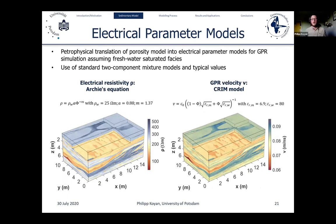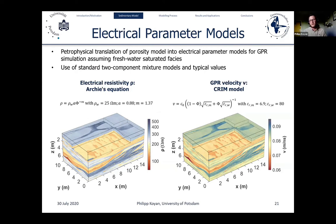To model GPR data, we need electrical parameter models of the subsurface. We performed a petrophysical translation of our porosity model assuming freshwater-saturated facies, using standard two-component mixture models with typical values for unconsolidated sediments. Applying Archie's equation yields a model for electrical resistivity with values ranging between 70 and 550 ohm-meters. Applying the CRIM model yields a velocity distribution ranging between 0.06 and 0.095 meters per nanosecond — both quite typical for a freshwater-saturated sedimentary system.